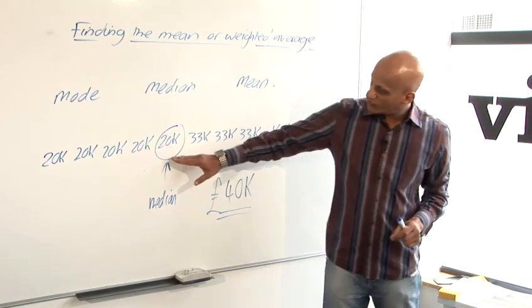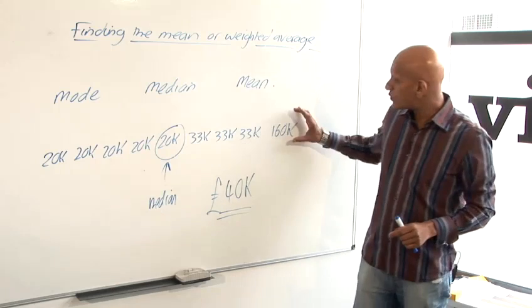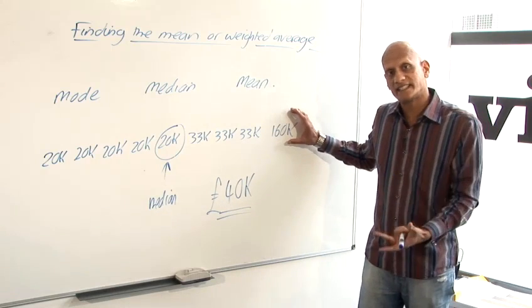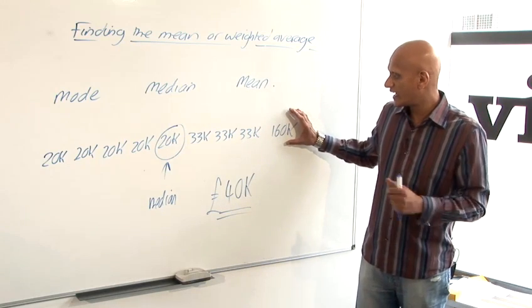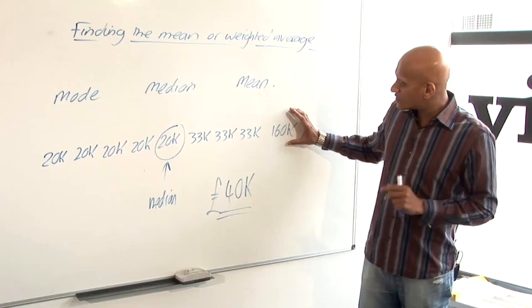The weighted average is very different from the median because this one large number has a large weight on the data, on the average. So that's why it's called the weighted average.